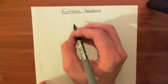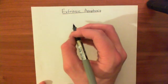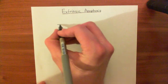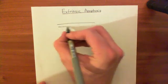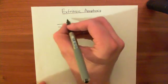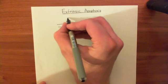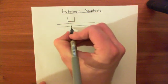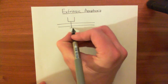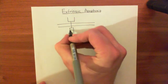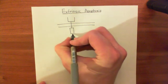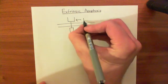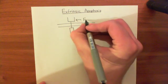On the surface of all cells, you have a receptor known as the FAS receptor. It has a very important internal domain which we'll talk about in a moment.